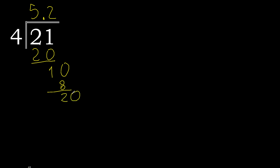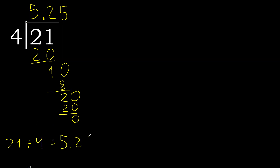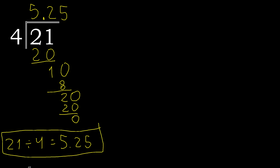Always complete with 0. The point is here. 20 — 4 multiplied by 5 is 20. 20 minus 20 is 0. Finish — therefore 21 divided by 4 is complete.